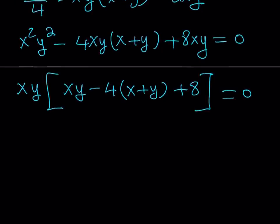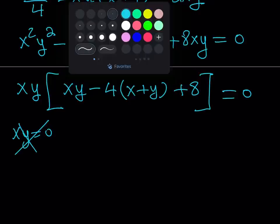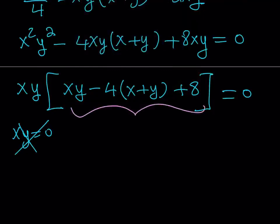When we do, we get xy(xy - 4(x + y) + 8) = 0. Great. Obviously, we're not going to be looking for degenerate solutions where xy = 0, because that would mean x is zero or y is zero. Those are not good triangles. We're going to be looking for good triangles, and they're going to come from the second factor.